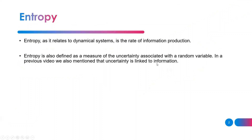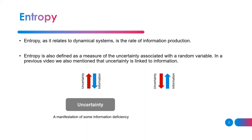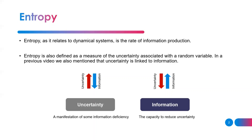So let's start. Entropy as it relates to the dynamical system, as we know from our previous videos, is a rate of information production. We defined entropy as a measure of uncertainty associated with a random variable. Uncertainty is also linked to information — the more uncertain you are, the less information you have, and vice versa. Entropy can also be defined as a measure of chaos.